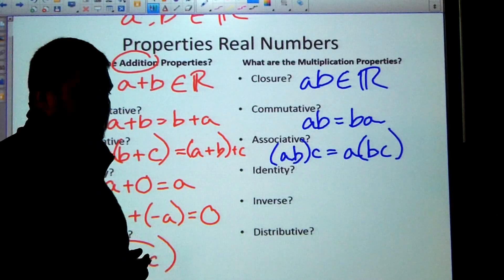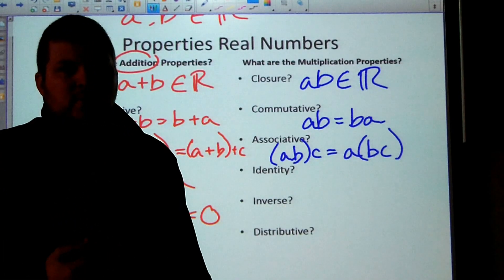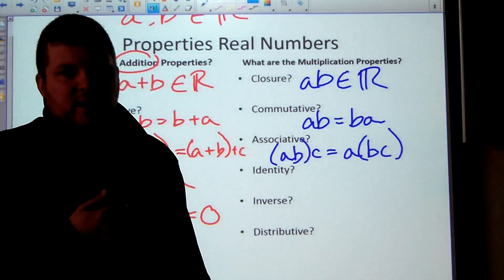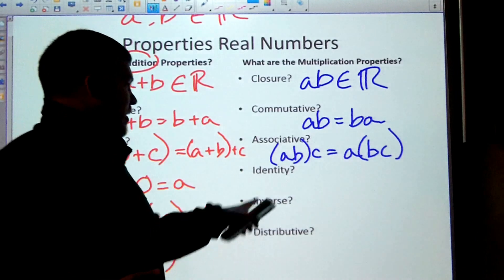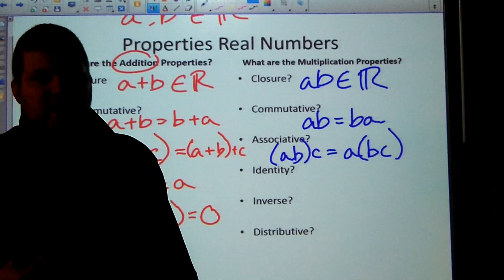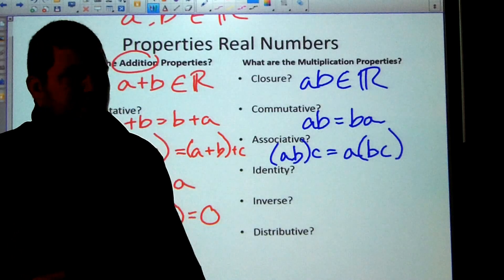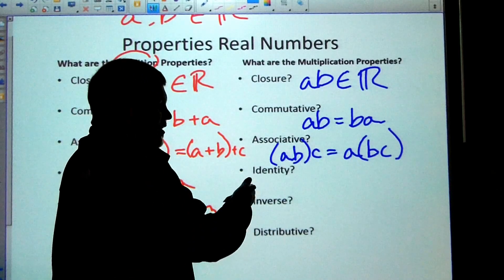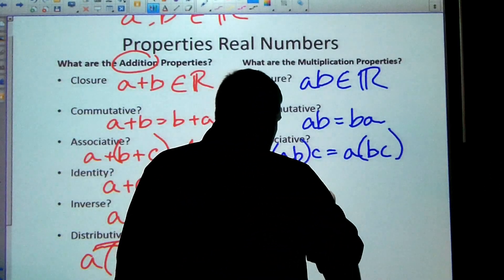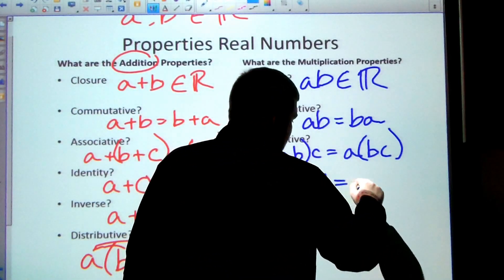And identity. So for addition, our identity element was zero. Now we're looking for a new identity element for multiplication, where if we multiply by that identity element, we're going to get the same thing back. So here for multiplication, the identity element is one. So anything times one is itself.